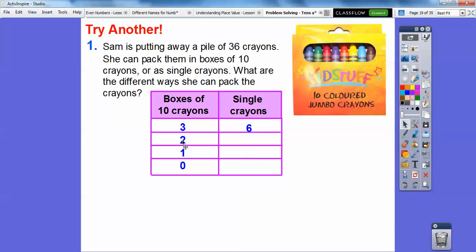So remember, when we decrease the amount by 10s, we just add 10 to this. So when this goes down by 1, that means it's going down by 10. So we're going to add 10 to 6. So 6 plus 10 is 16. So this is 30 plus 6. That's 36 right there. So this is going to be 20 plus 16 because, remember, this is 20 right here. 2 boxes of 10. So this is going to be 16 single crayons right here.